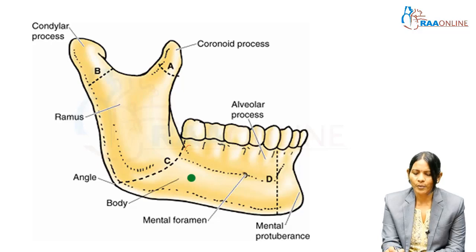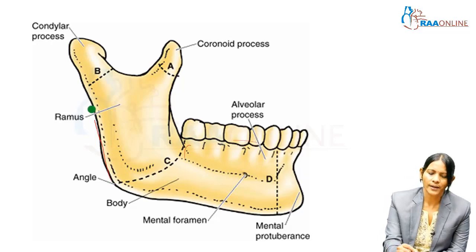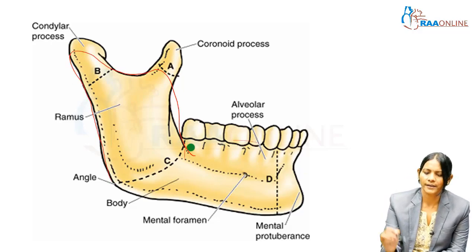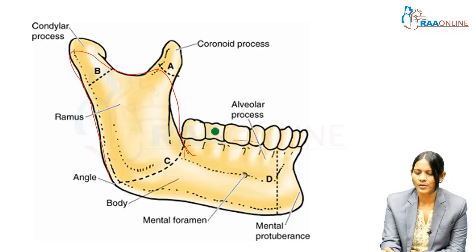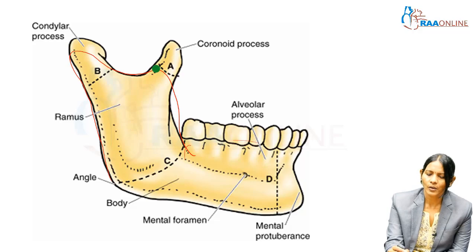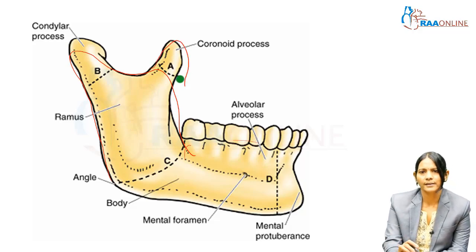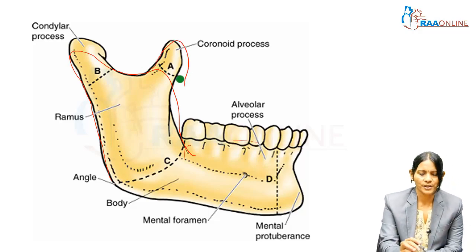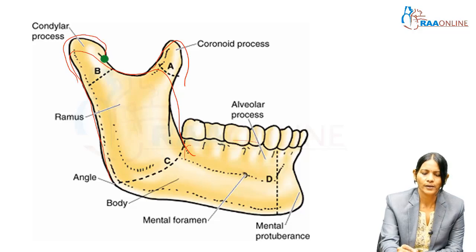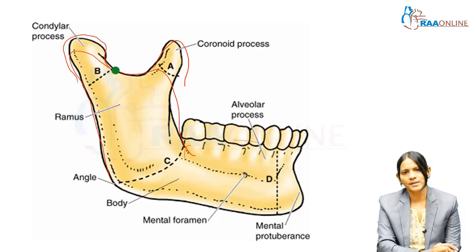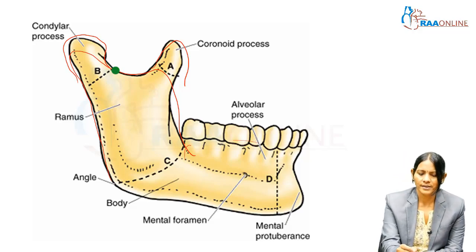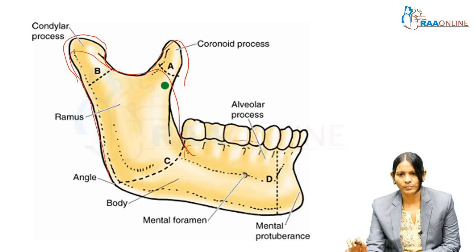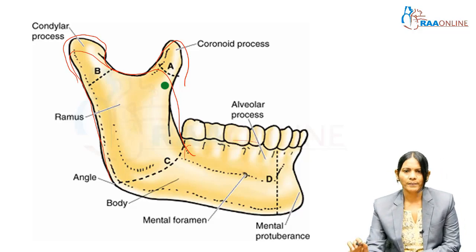We are more interested in this area, which is the mandibular fossa — the articular part for the head of the mandible in the temporomandibular joint. Here is the articular tubercle and here is the mandibular fossa. Coming to the mandible: this is the body of the mandible and this is the ramus of the mandible, and there are three processes. The alveolar process lodges the teeth, the coronoid process gives attachment to the temporalis, and the condylar process is the one which articulates with the temporal bone.